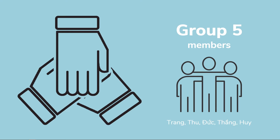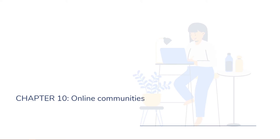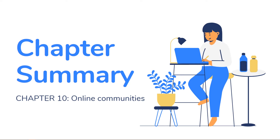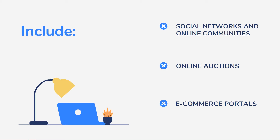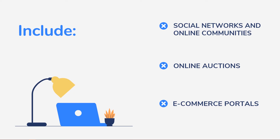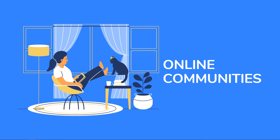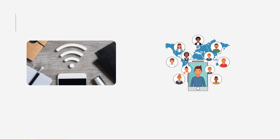Hi everybody, we are Group 5 and we have five people. Welcome to our presentation. This video is a chapter summary of our group. We have Chapter 10: Online Communities. This presentation has three parts: social networks and online communities, online auctions, and e-commerce portals. The first part is online communities.